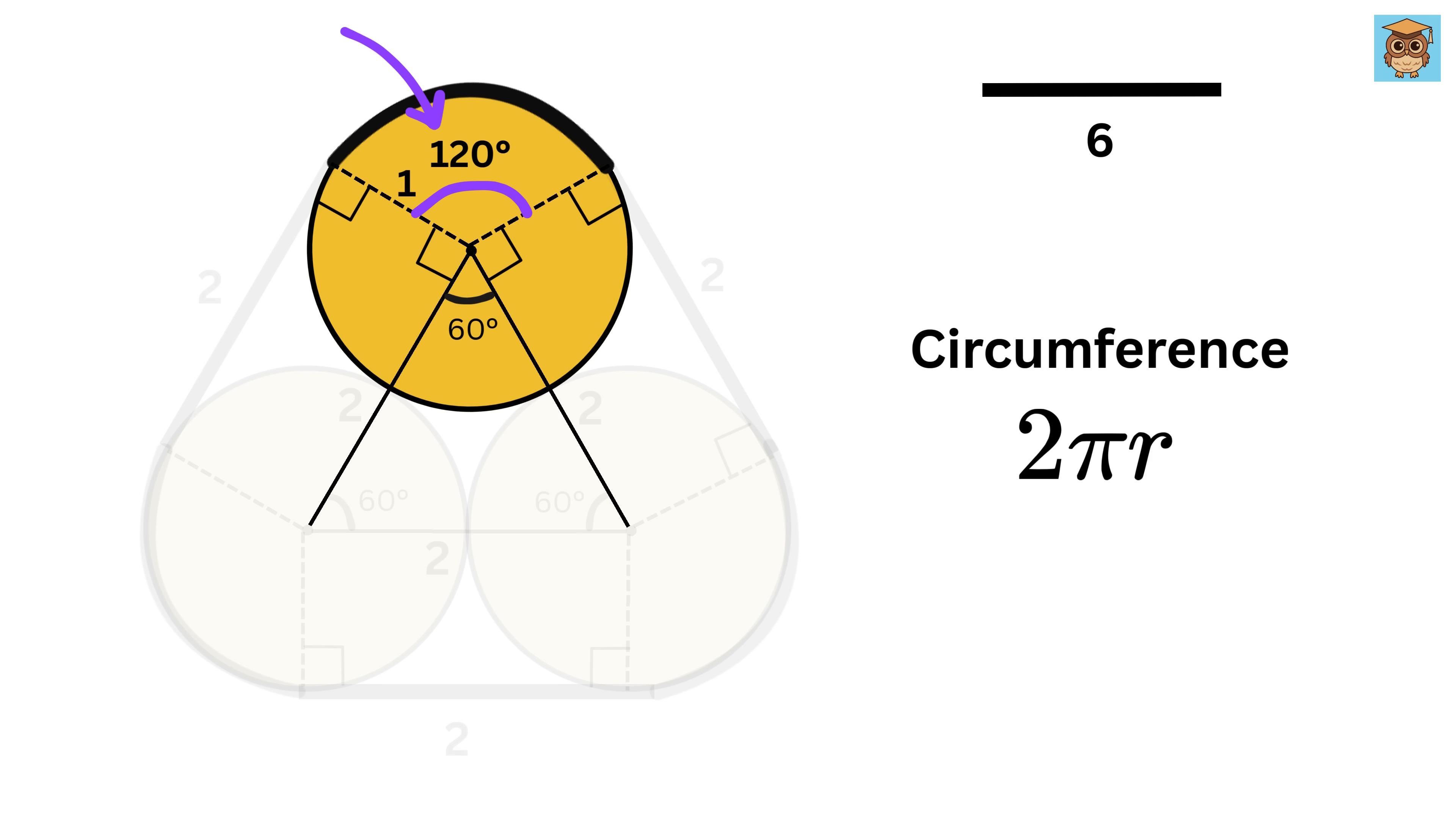That means the band covers a 120 degree arc on each circle. Circumference of a circle is equal to 2π times its radius. Radius is one unit, and thus the circumference of this circle is 2π units.